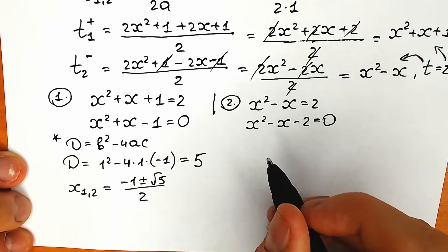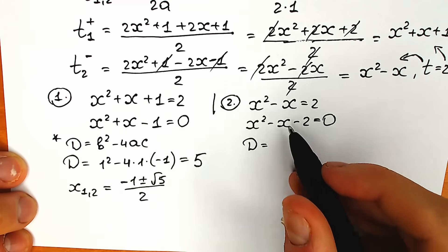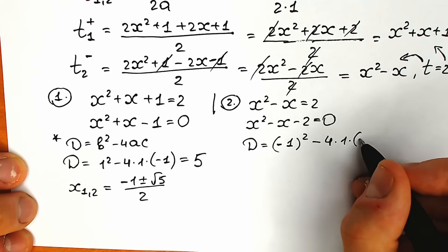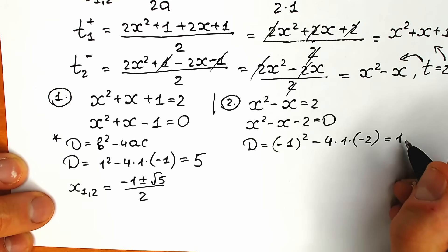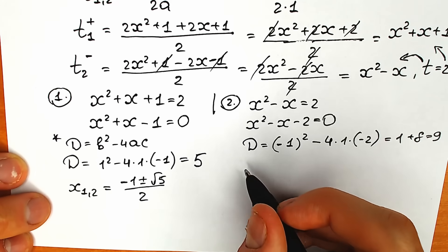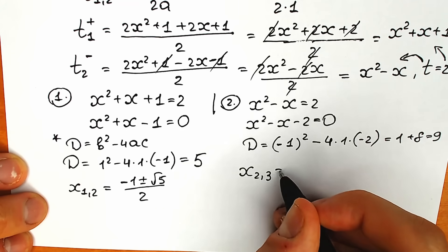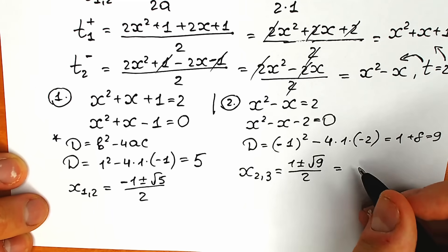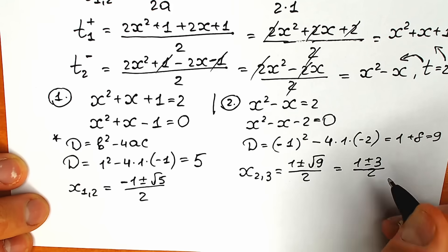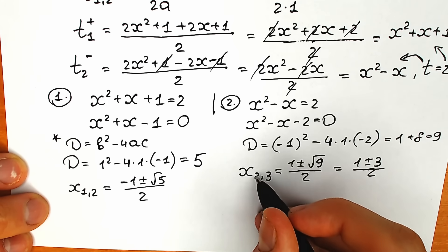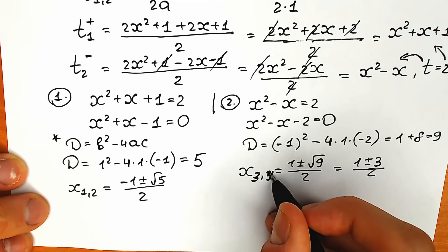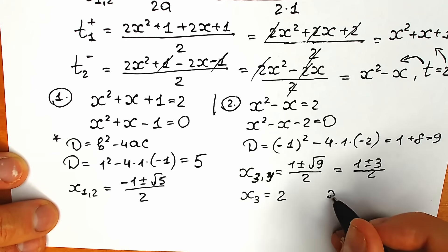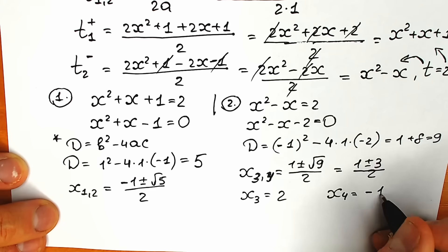For the second equation: x² − x = 2 gives x² − x − 2 = 0. Discriminant equals (−1)² − 4(1)(−2) = 1 + 8 = 9. So x₃,₄ = (1 ± √9) / 2 = (1 ± 3) / 2. With the plus sign: x₃ = (1+3)/2 = 2. With the minus sign: x₄ = (1−3)/2 = −1.